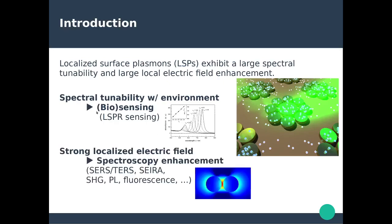The second property — the strong localized electric field — will be used to enhance optical spectroscopy signals. Some examples of optical spectroscopies that benefit from localized surface plasmons include surface enhanced Raman spectroscopy, surface enhanced infrared absorption, second harmonic generation, photoluminescence, and so on. Essentially all optical spectroscopy techniques you can think of can benefit from the presence of localized surface plasmons to enhance their optical signal.